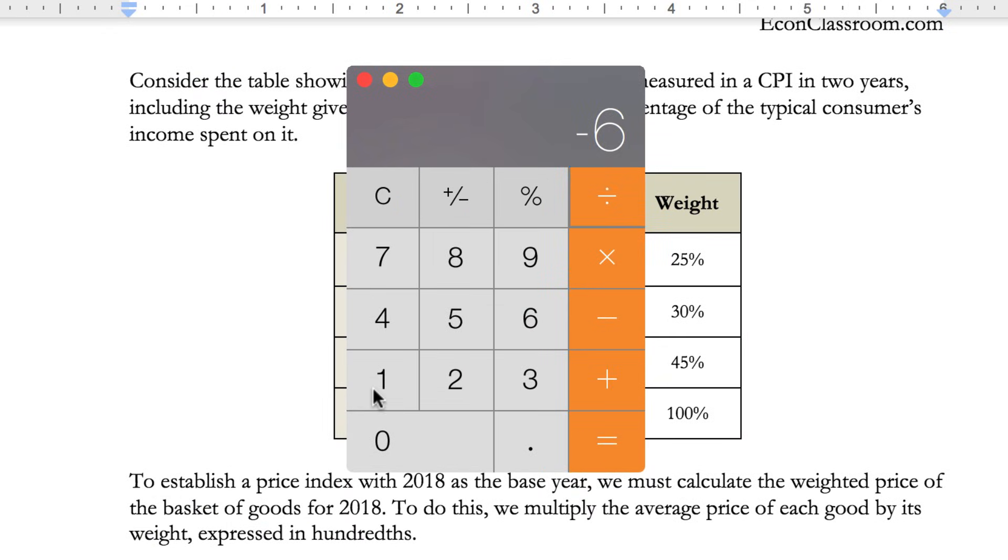Negative 6 divided by 128, negative 0.04, and multiply that by 100. We had an inflation rate of negative 4.68%.